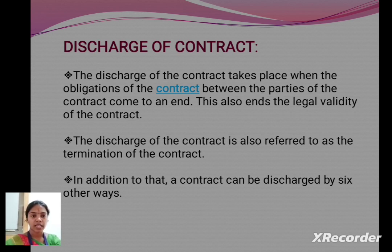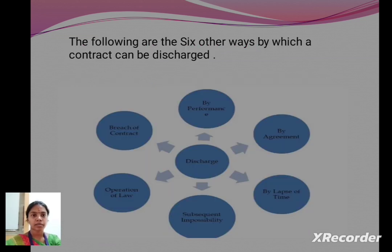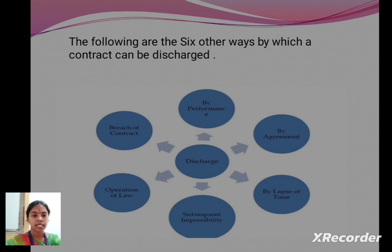A contract can be discharged by six ways. They are: by performance, by agreement, by lapse of time, by subsequent impossibility, by operation of law, and by breach of contract.